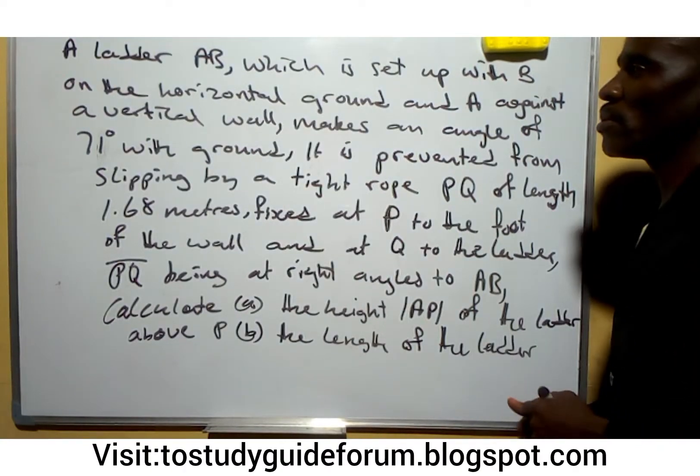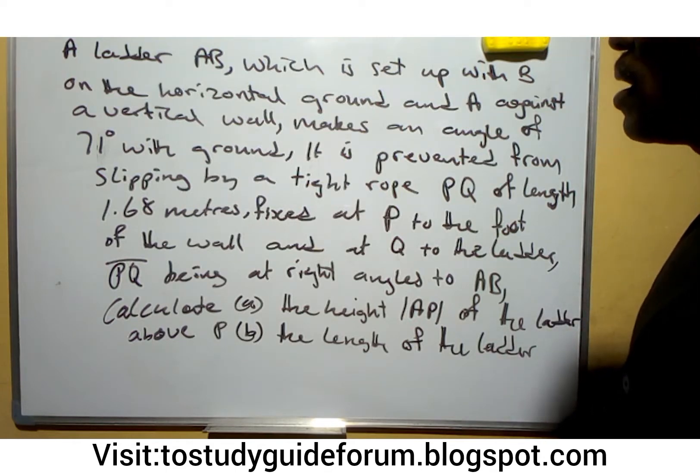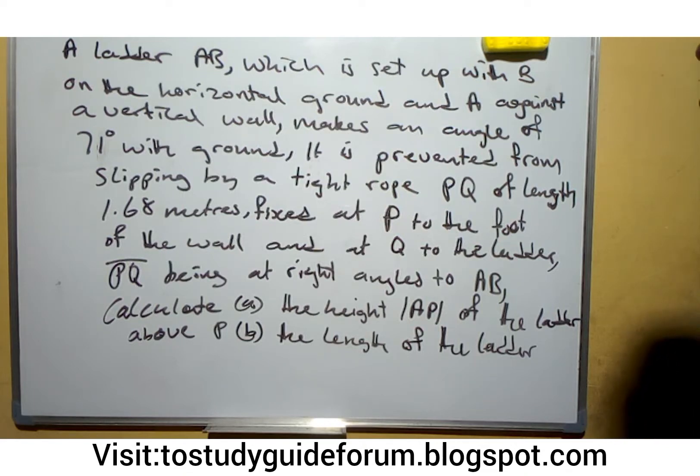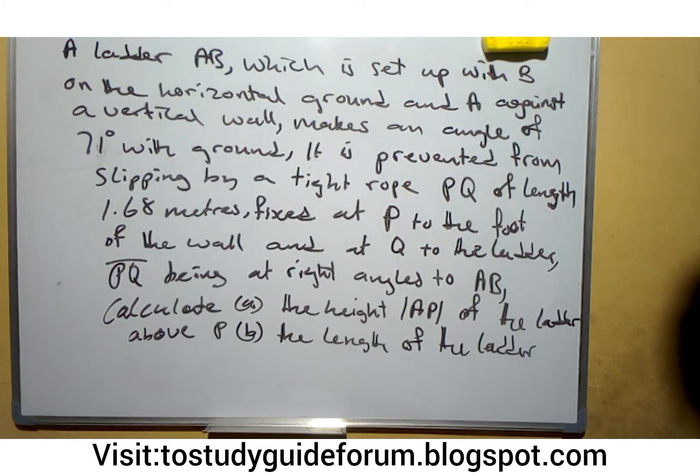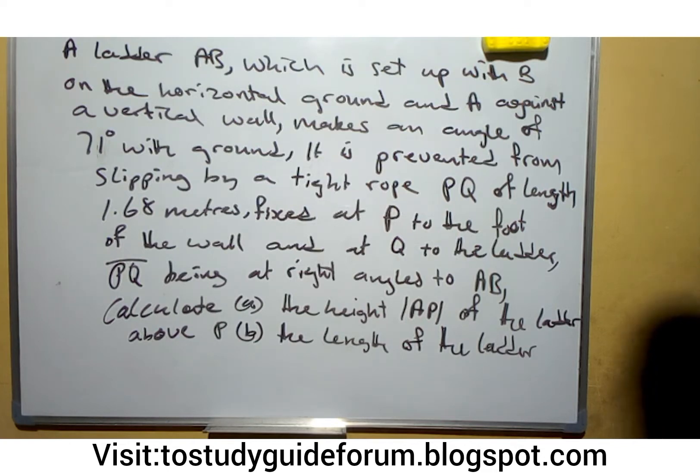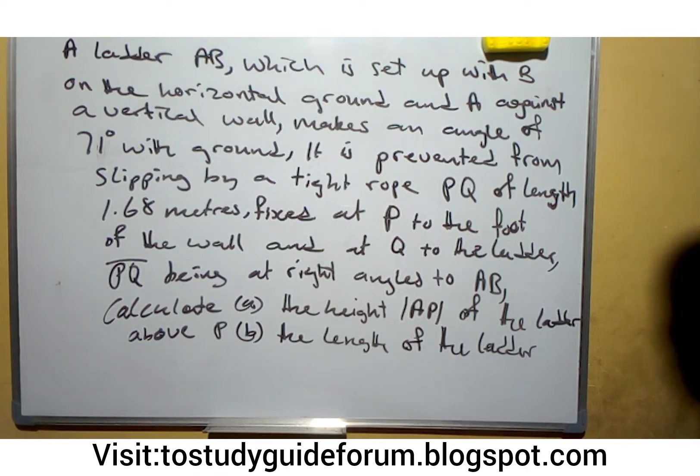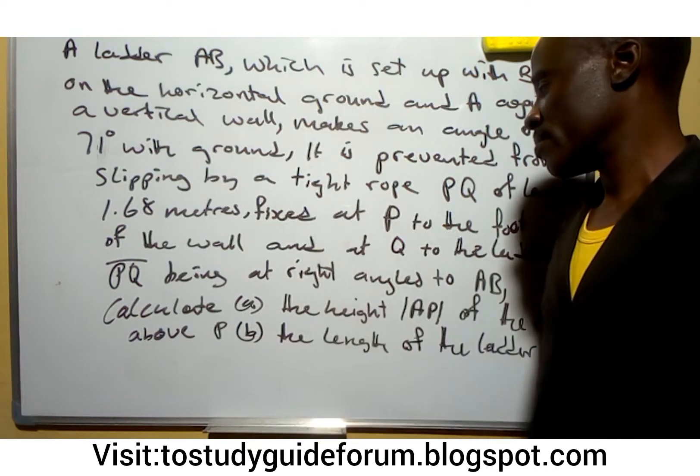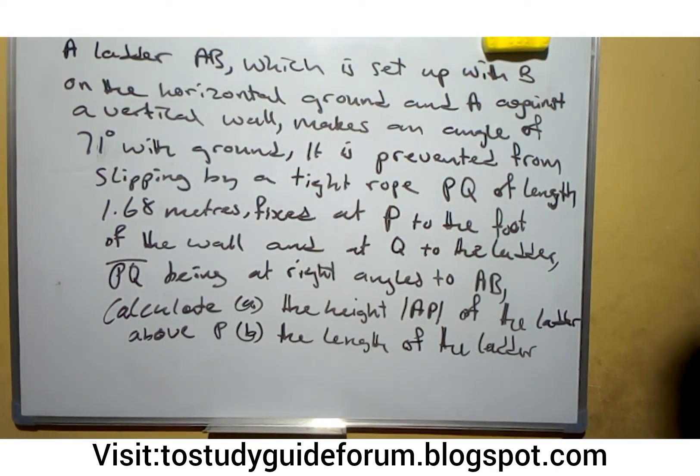Hello everyone, we have a question on the board here that has to do with a ladder AB which is set up with B on the horizontal ground and A against the vertical wall, making an angle of 71 degrees with the ground. It is prevented from slipping by a tight rope PQ of length 1.68 meters fixed at P to the foot of the wall and at Q to the ladder. PQ being at right angle to AB, calculate the height AB of the ladder above B and the length of the ladder.